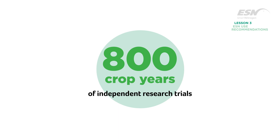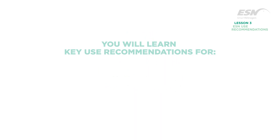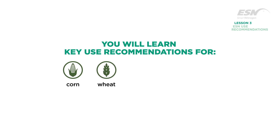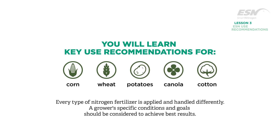Use recommendations for ESN have been developed from over 800 crop years of independent research trials and are based on optimal growing conditions. In this lesson you will learn the key use recommendations for corn, spring and winter wheat, potatoes, canola, and cotton. Every type of nitrogen fertilizer is applied and handled differently; a grower's specific conditions and goals should be considered to achieve best results.